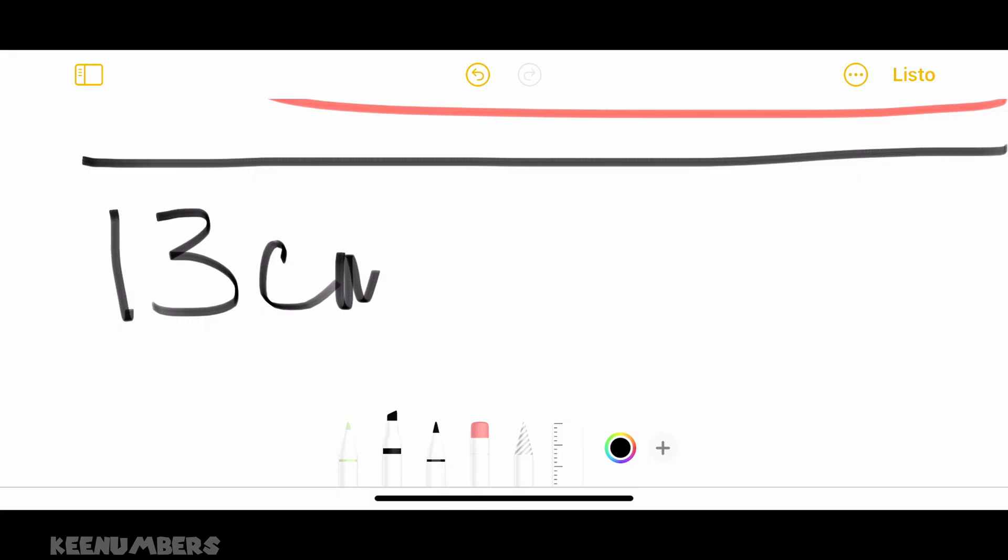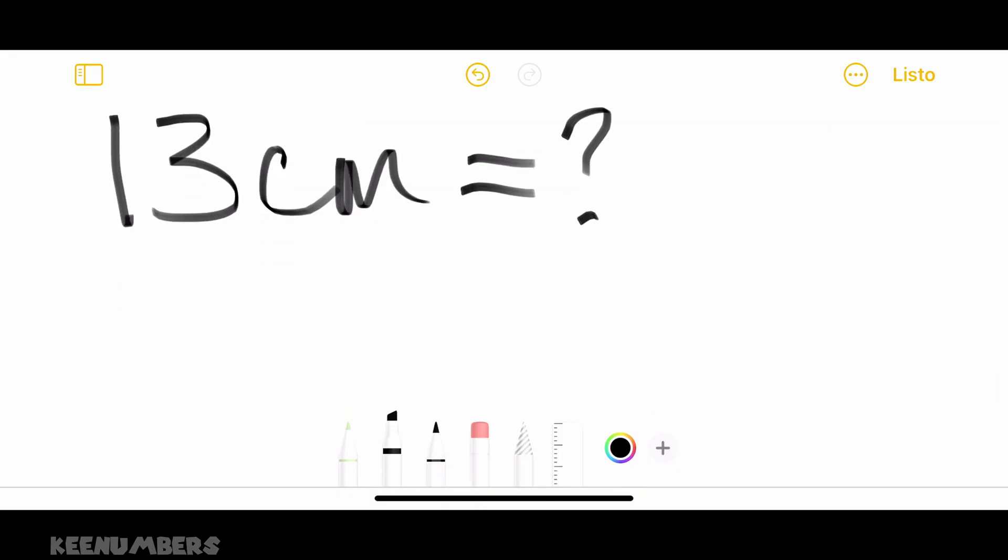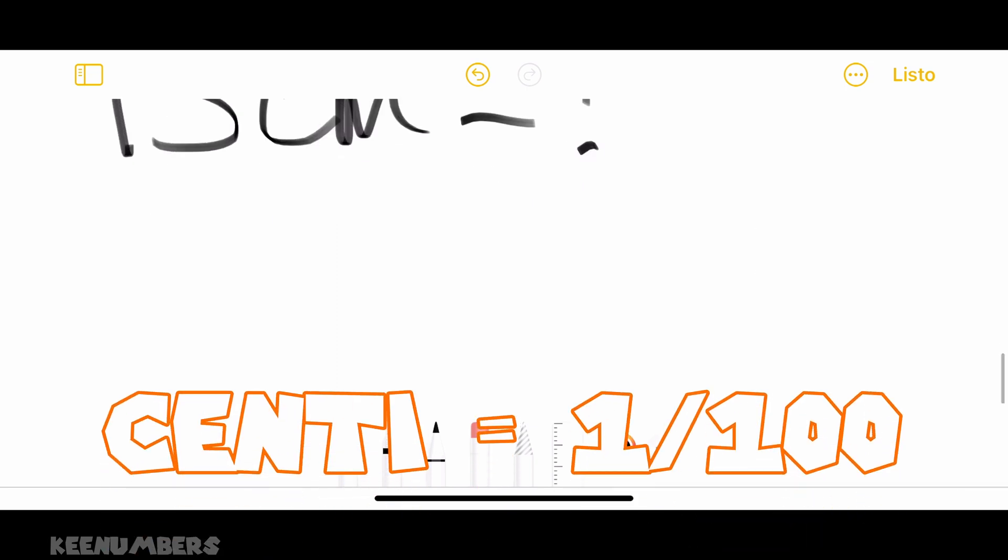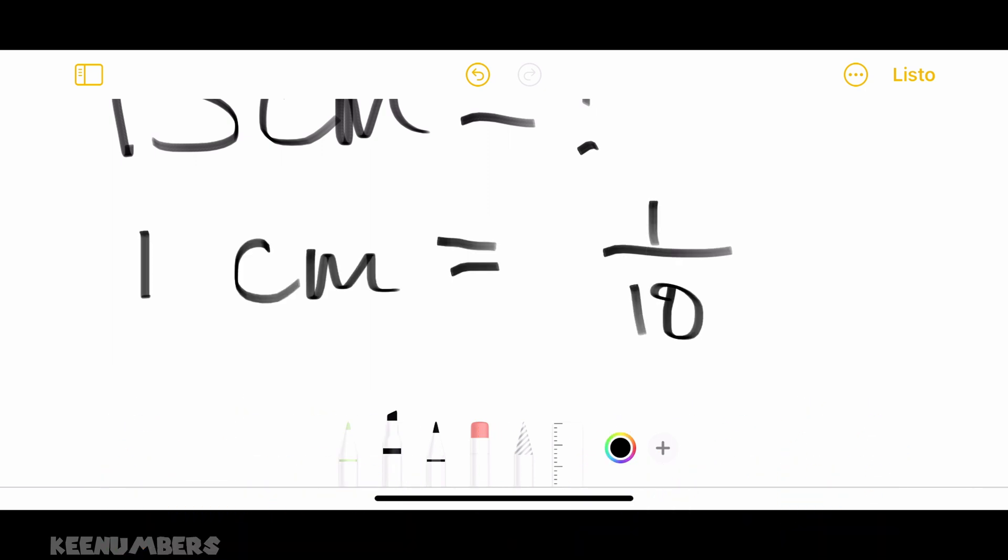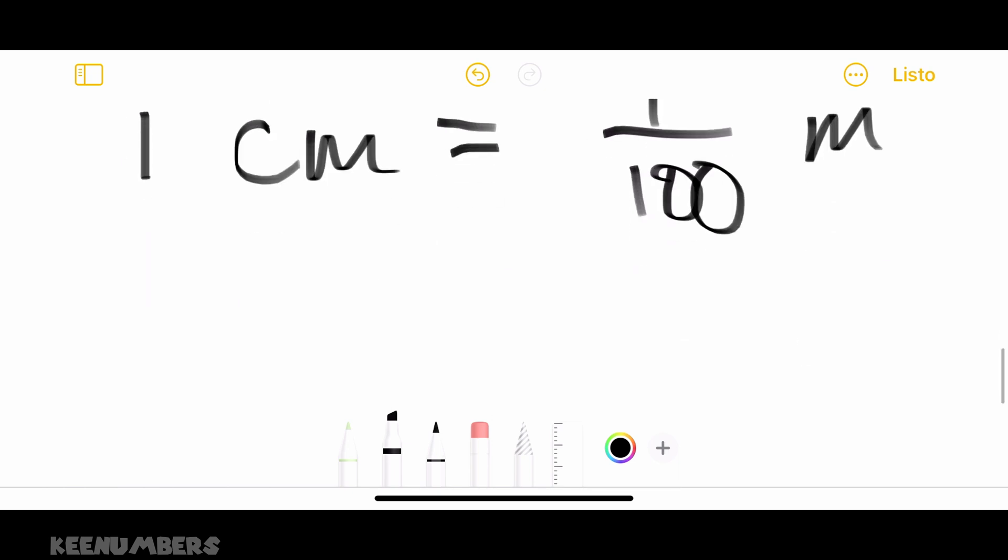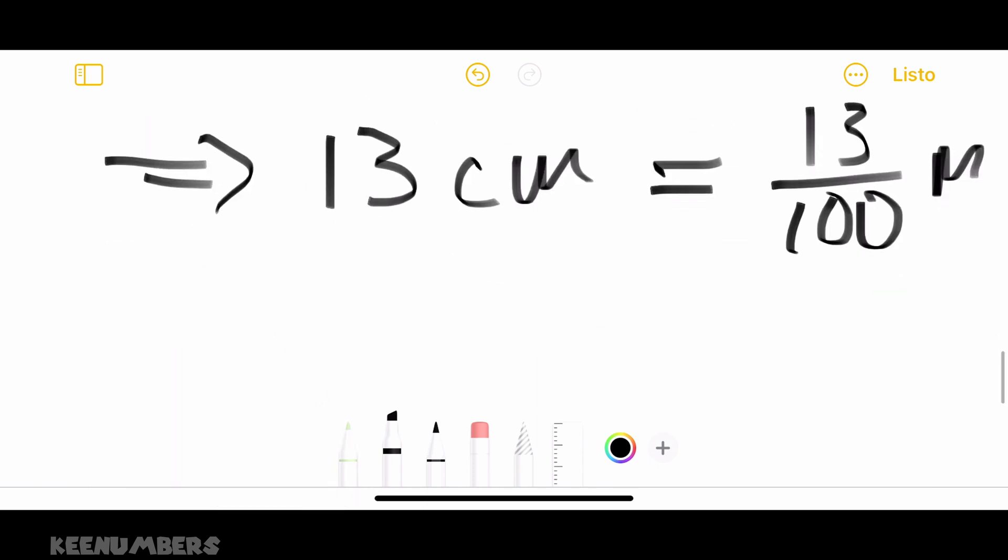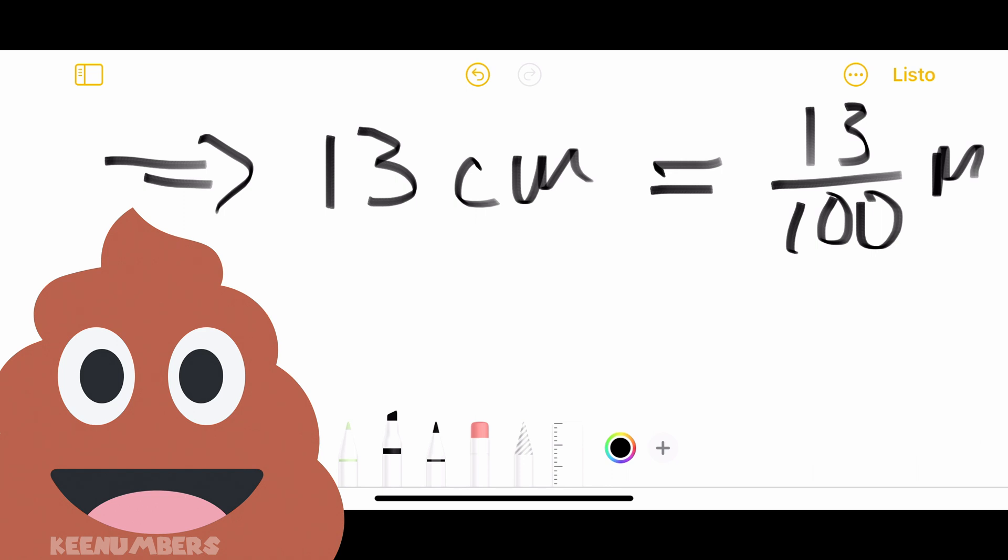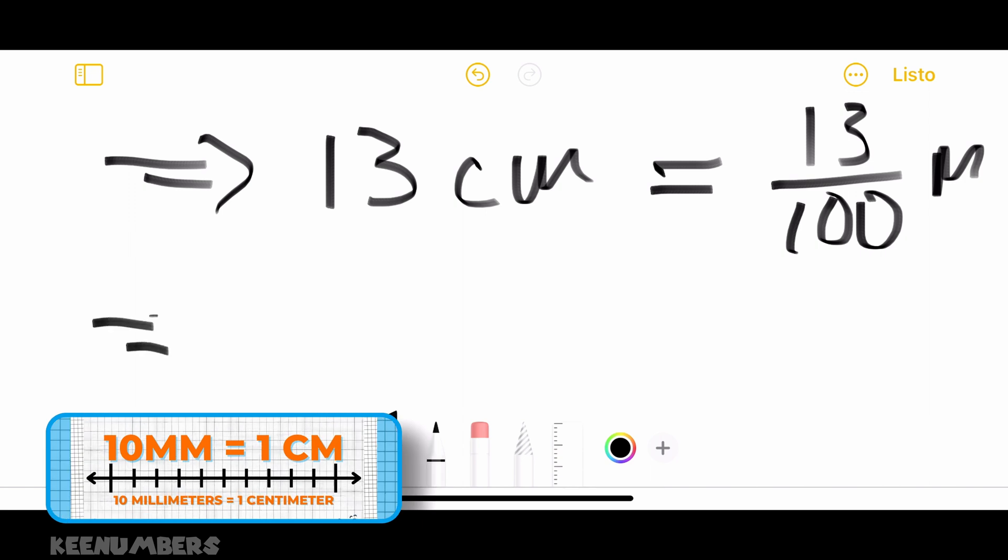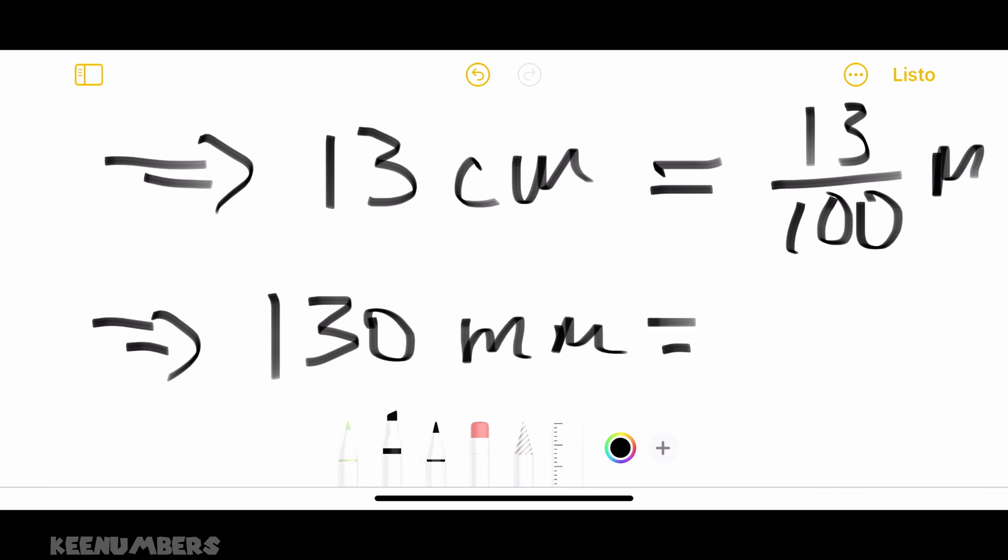Let's convert thirteen centimeters. If you have a centimeter, that's one one-hundredth of a meter. One centimeter is equal to one one-hundredth of a meter, because the centimeter is by definition one one-hundredth of a meter. That's what the prefix centi means. And so thirteen of these will give you thirteen one-hundredths of a meter. Additionally, there are ten millimeters in every centimeter. So ten sets of thirteen is going to be one hundred and thirty millimeters.